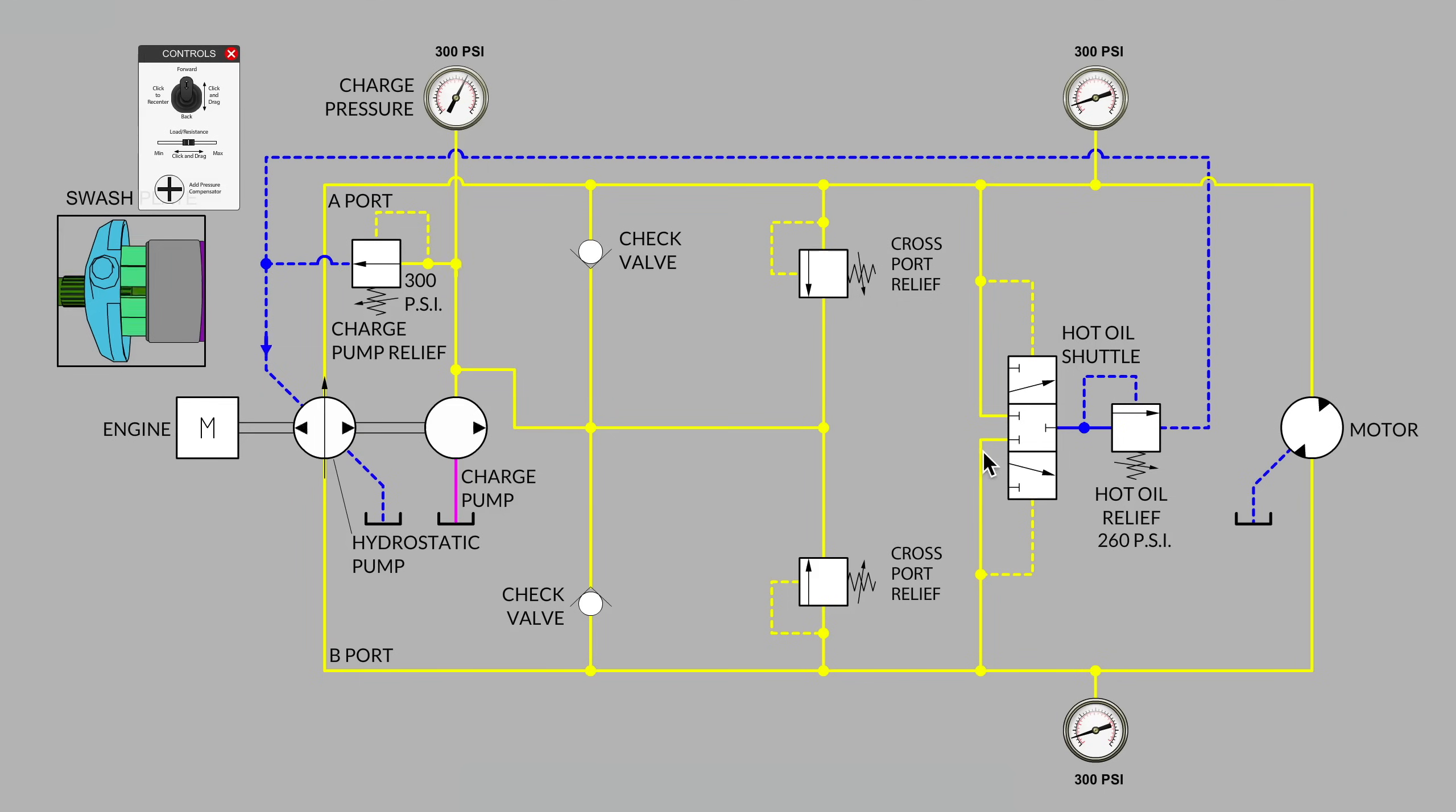There's no oil leaving the hot oil shuttle at this time. Why? Because the same pressure from the A side of the loop is piloting the hot oil shuttle as the same pressure from the B side of the loop. So it's being held in its center position. And as you can see by looking at the hot oil shuttle, it is a closed center valve. So there's nowhere else for the charge pump flow to go at this time other than over the charge pump relief valve.